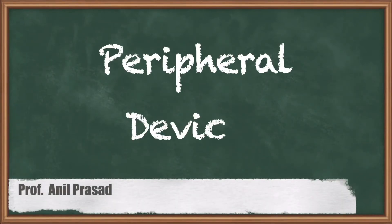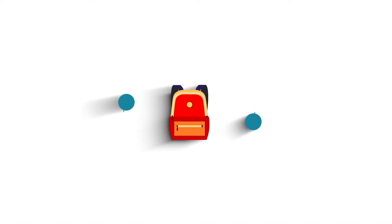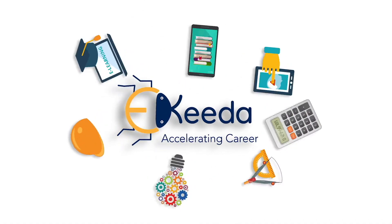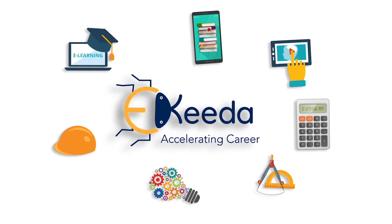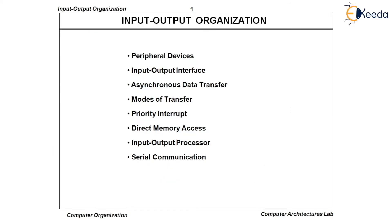Hello everyone. In this session, we will start I/O organization — how a computer system is going to manage and deal with the peripheral devices. Peripheral devices are essential devices by using which either a user or a programmer will be able to communicate with the computer system.